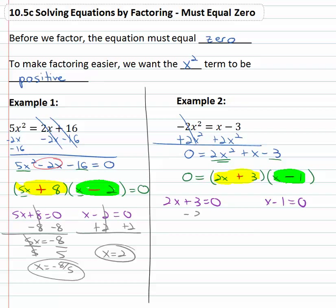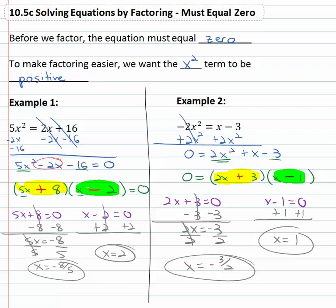Simply solving these by subtracting three, 2x = -3, divide by two. Our first solution for x is negative three halves. Adding one to both sides gives us our second solution for x, x = 1.